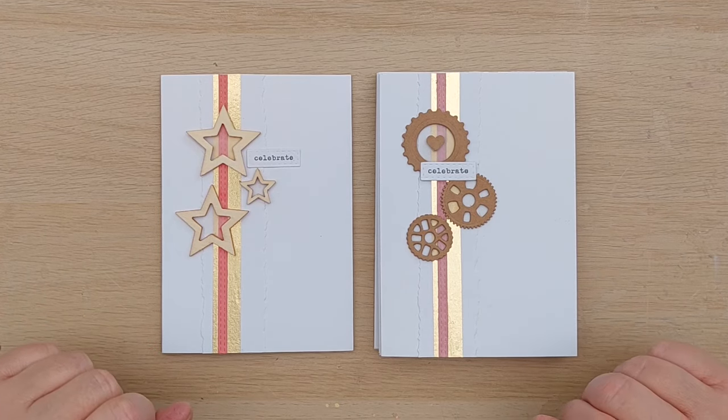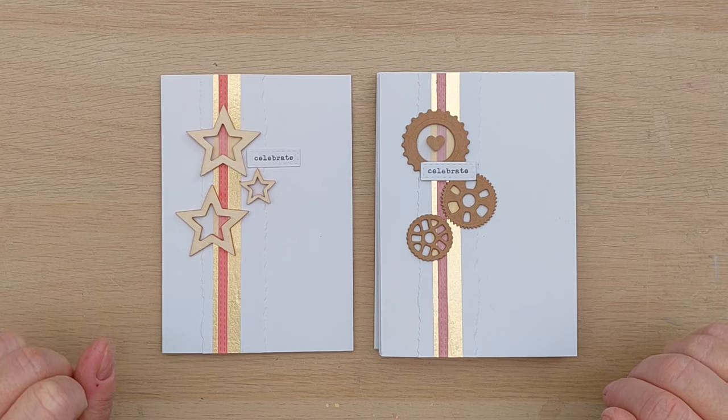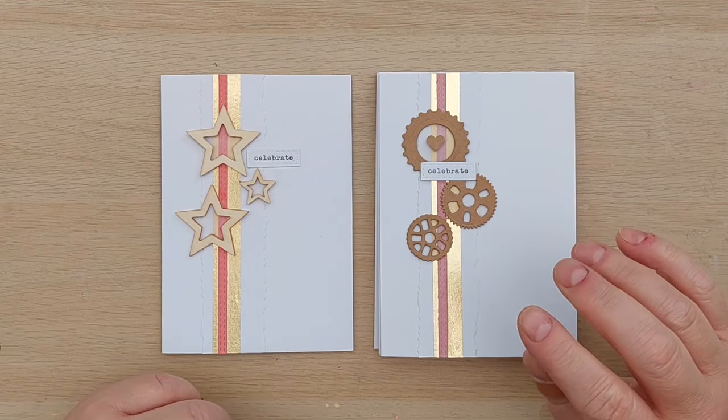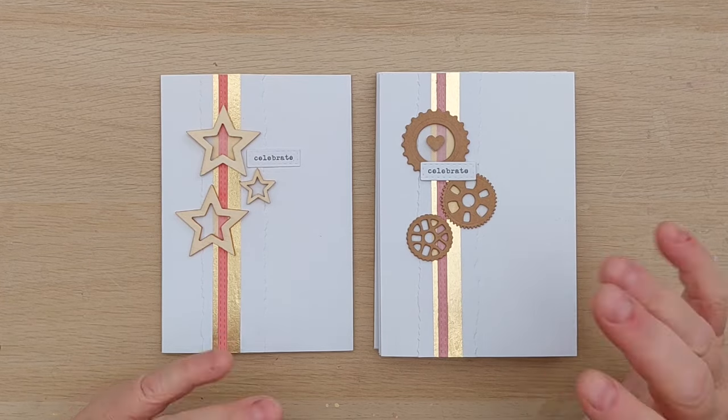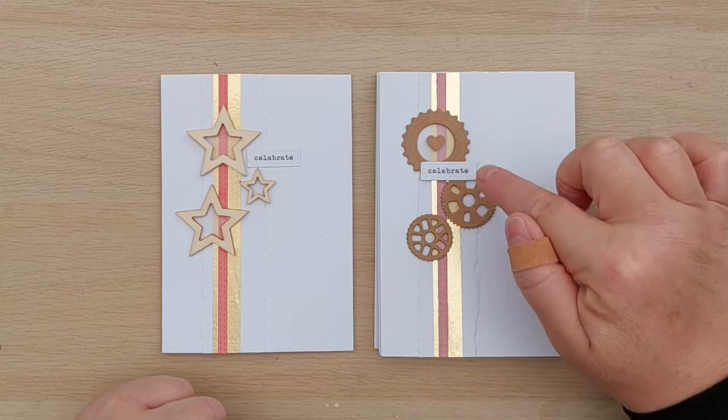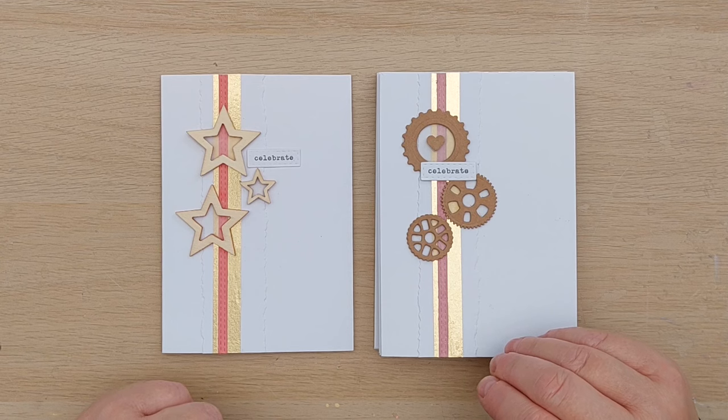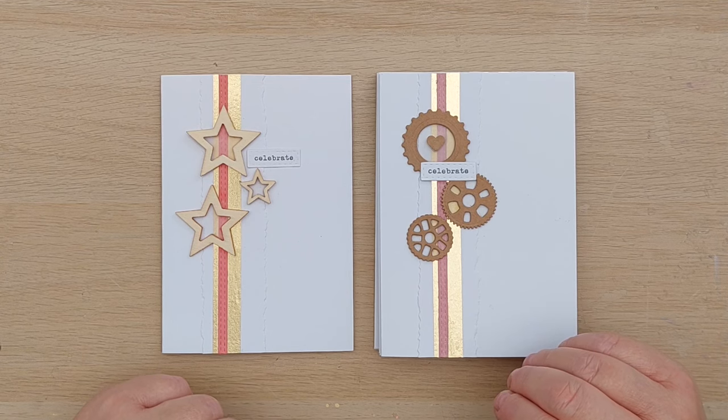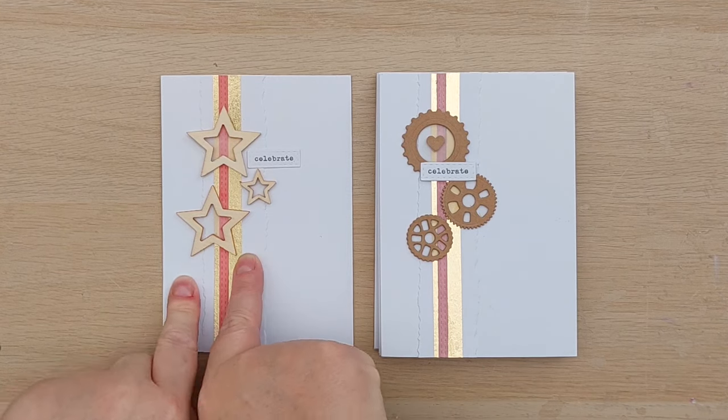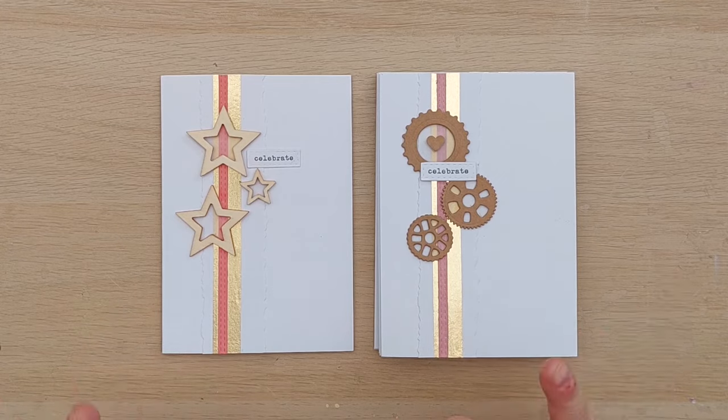So I've got five non-Christmas cards for you made using this same idea. This one I used cog dies to cut out cogs from craft card, brown cardstock. I actually cut three of each size and layered them one on top of the other and glued them together and then backed them with vellum. And I did this because the only wooden shapes I've got are stars, so if you don't have any wooden shapes you can make faux wooden shapes using brown card.